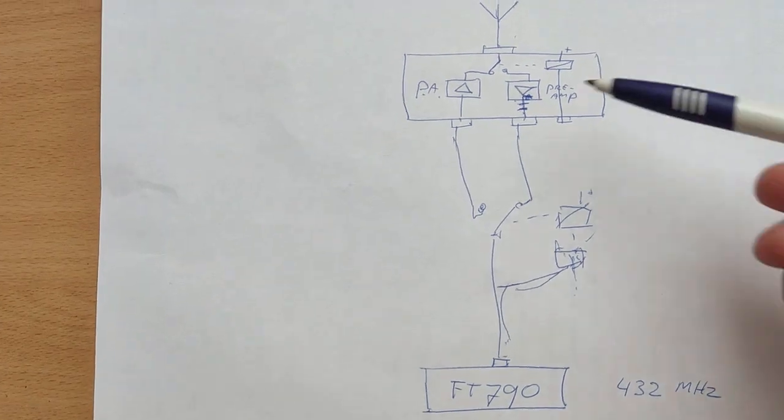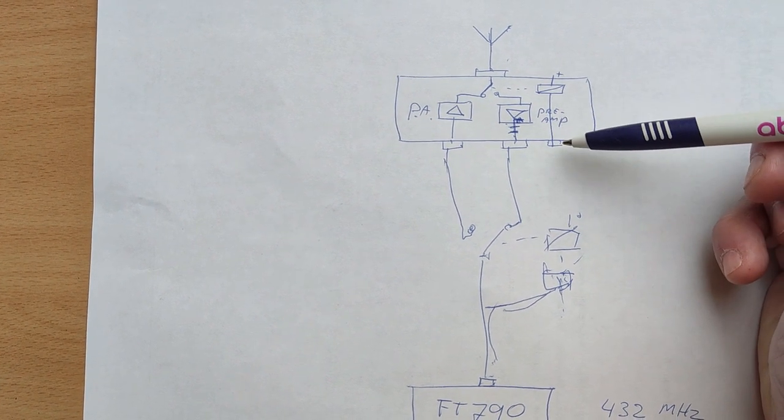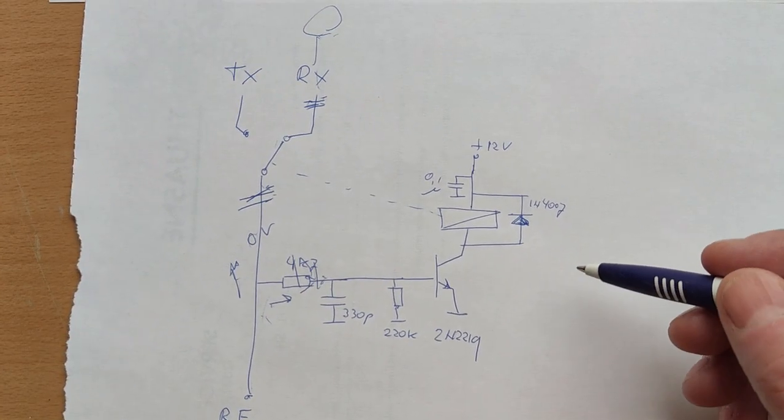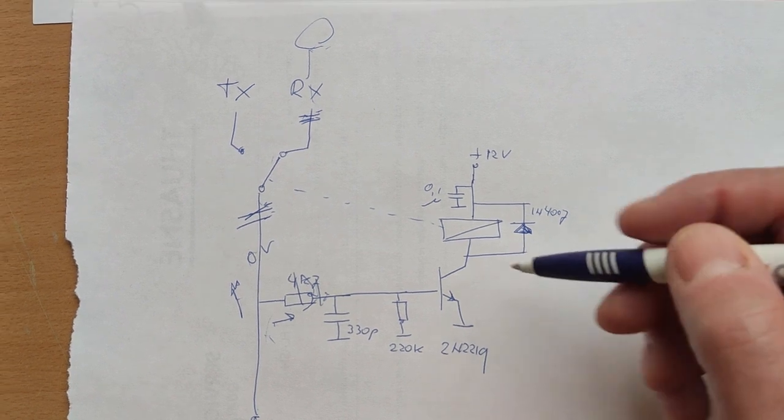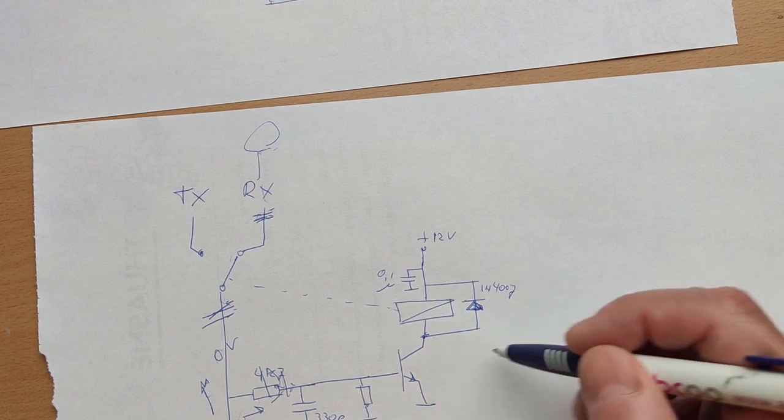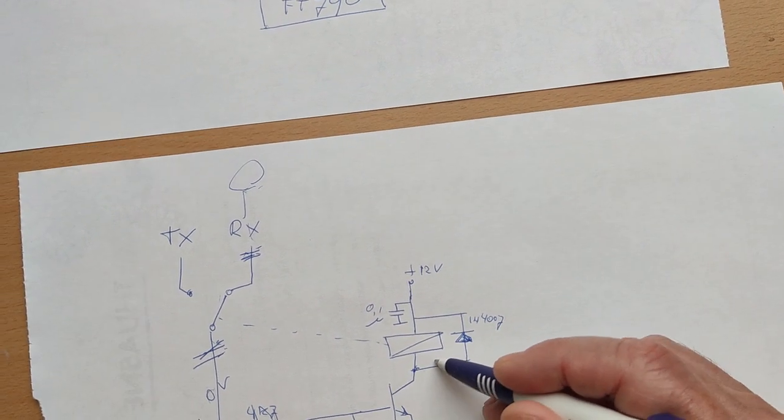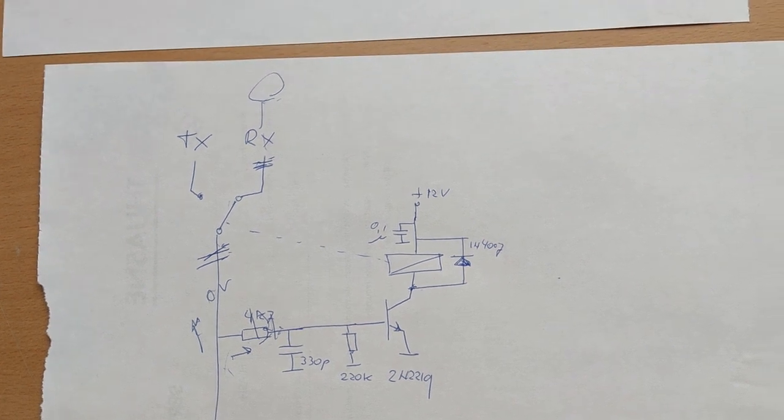Another issue, this relay has also to be operated. And therefore, it needs to be switched to common also. But this relay is also to common. So we cannot do this relay in parallel with that relay. So we need to have another transistor for it.